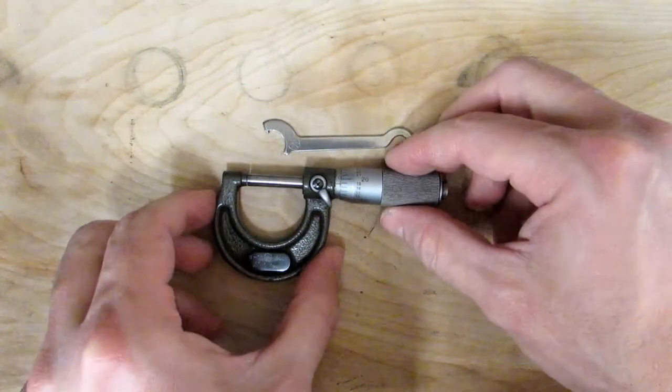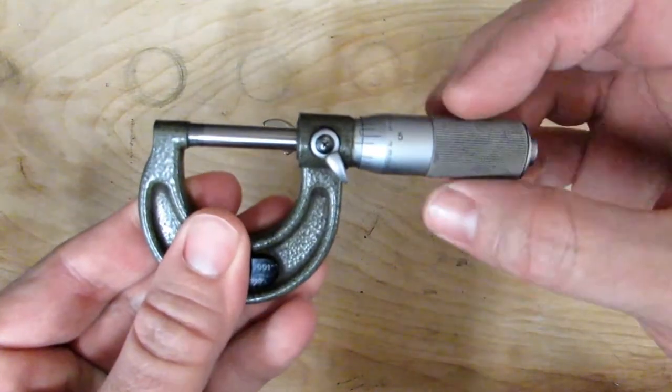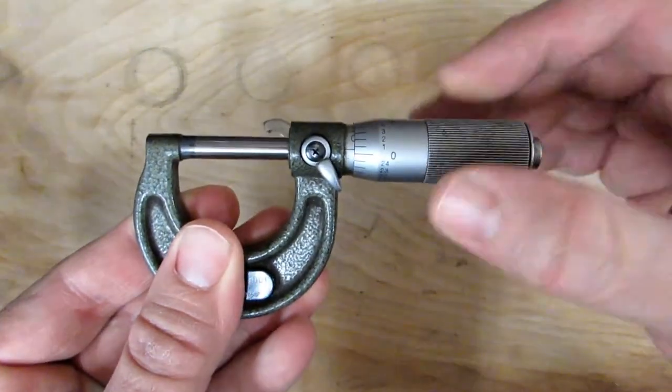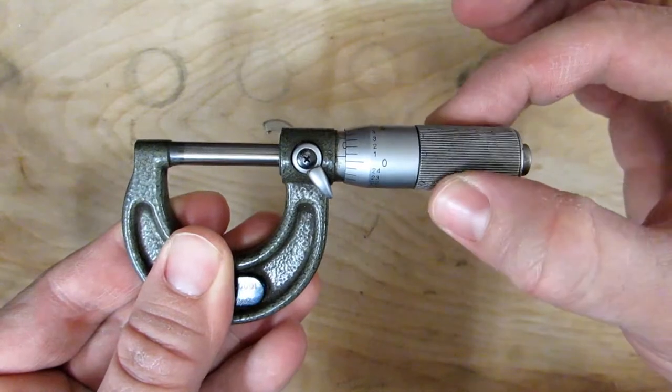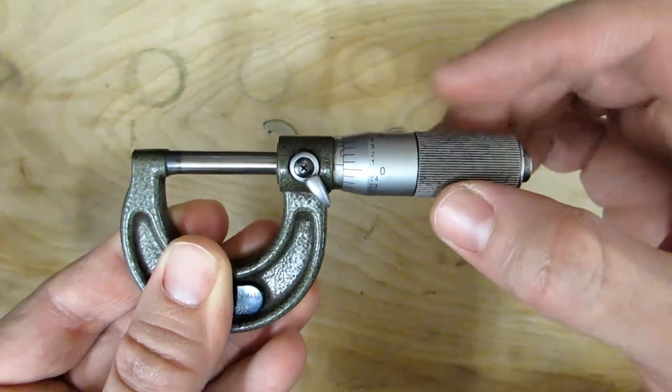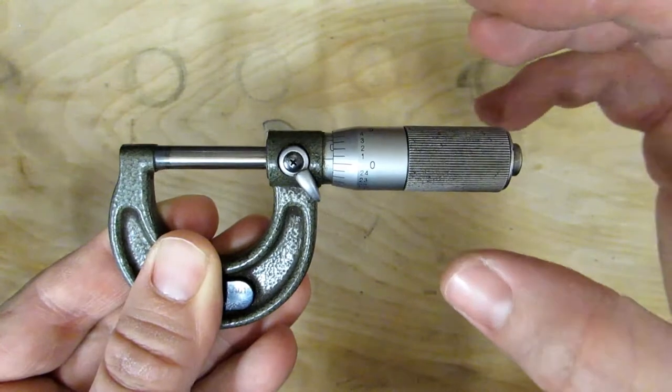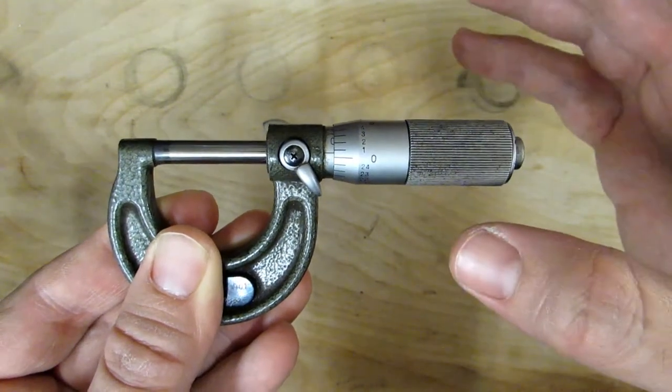Now that your micrometer is clean, you can go ahead and close it all the way and see if it actually reads zero. And when I do this, I always use the friction thimble or ratchet thimble that's equipped on the micrometer. That way you know that it's stopping at the same point every single time. That's what that's there for.